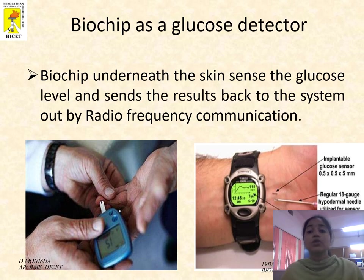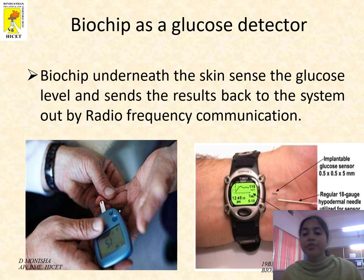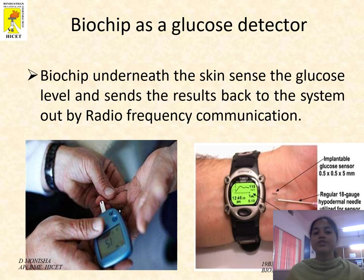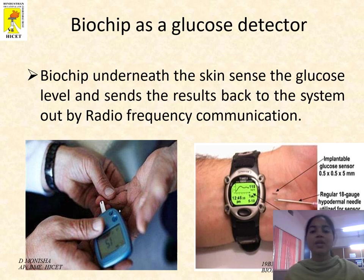Biochip as a glucose detector: A very tiny micro biochip is injected in the human wrist to monitor the blood glucose level. Its size is 0.5 × 0.5 × 5 mm. A hypodermal syringe needle is used to implant the sensors in the human body. The result or data is sent through radio frequency communications.